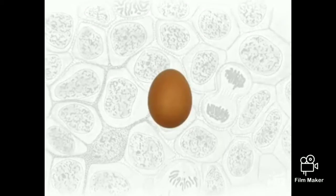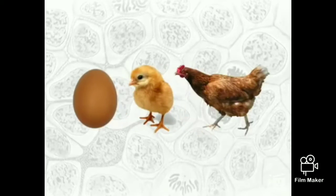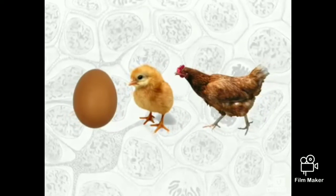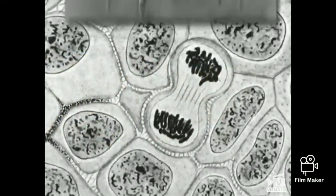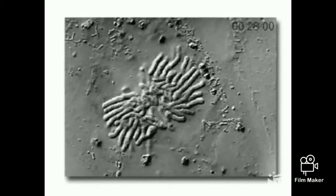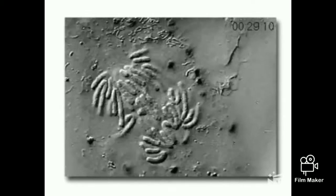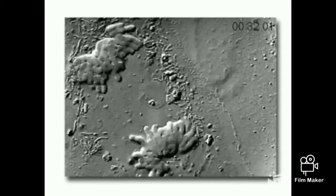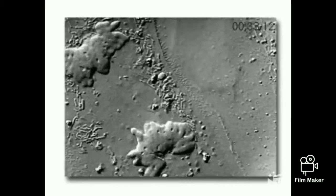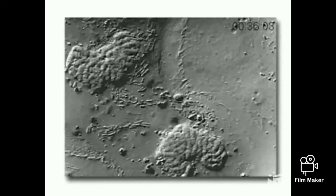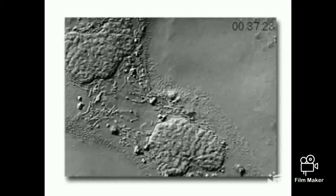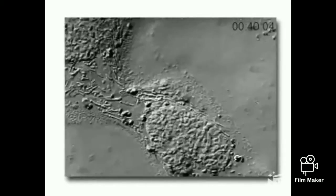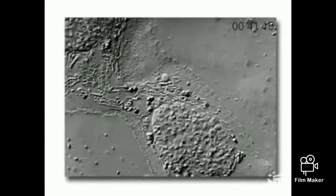Cell division is required for an organism to grow, mature, and maintain tissues. During the mitotic phase, a cell will undergo mitosis to form two new nuclei, and then divide to form two new individual cells during cytokinesis.